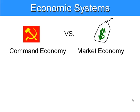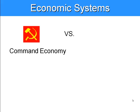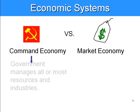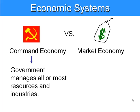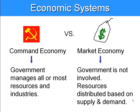Two ends of a spectrum we can think about: command economies versus a market economy. A command economy is an economic system where the government manages all, or in some cases most, of the resources within the nation and oversees the types of industries that are going to operate. In a market economy, government is not involved — resources get distributed based on supply and demand.